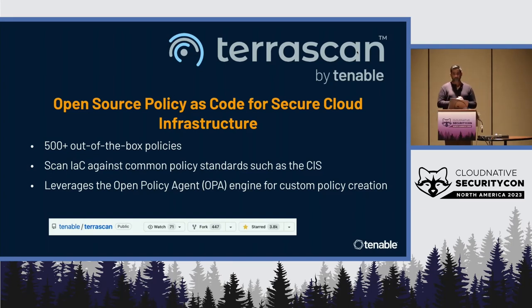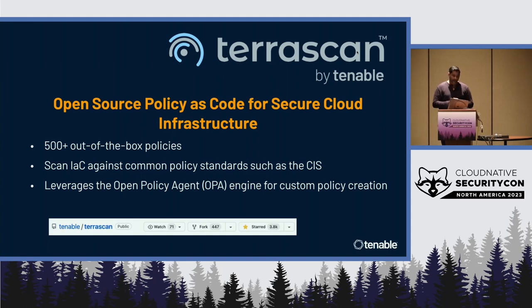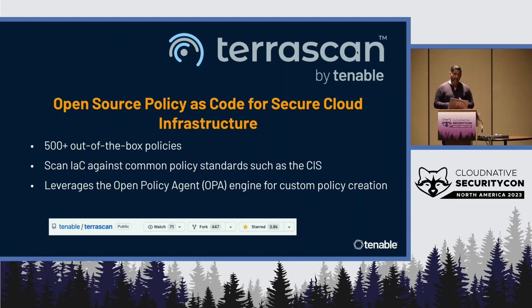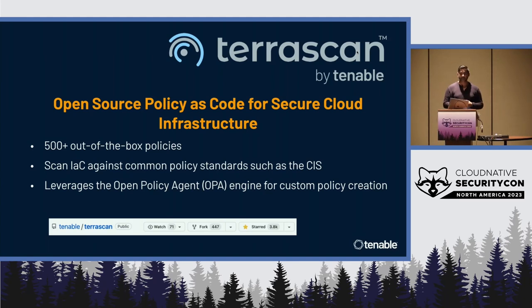This is where TerraScan comes in. It's an open source solution by Tenable, available on GitHub, driven by community with a lot of interest as you can see from forks and stars. It comes with 500-plus policies out of the box. It supports IAC engines like Terraform, Helm charts, and Dockerfiles — so you can scan all of those. Plus it has benchmark support, specifically CIS. It leverages the Open Policy Engine if you want to create your own custom policies or expand on the existing built-in ones. I'll show you this in action and also tell you a way you can test it without downloading it.